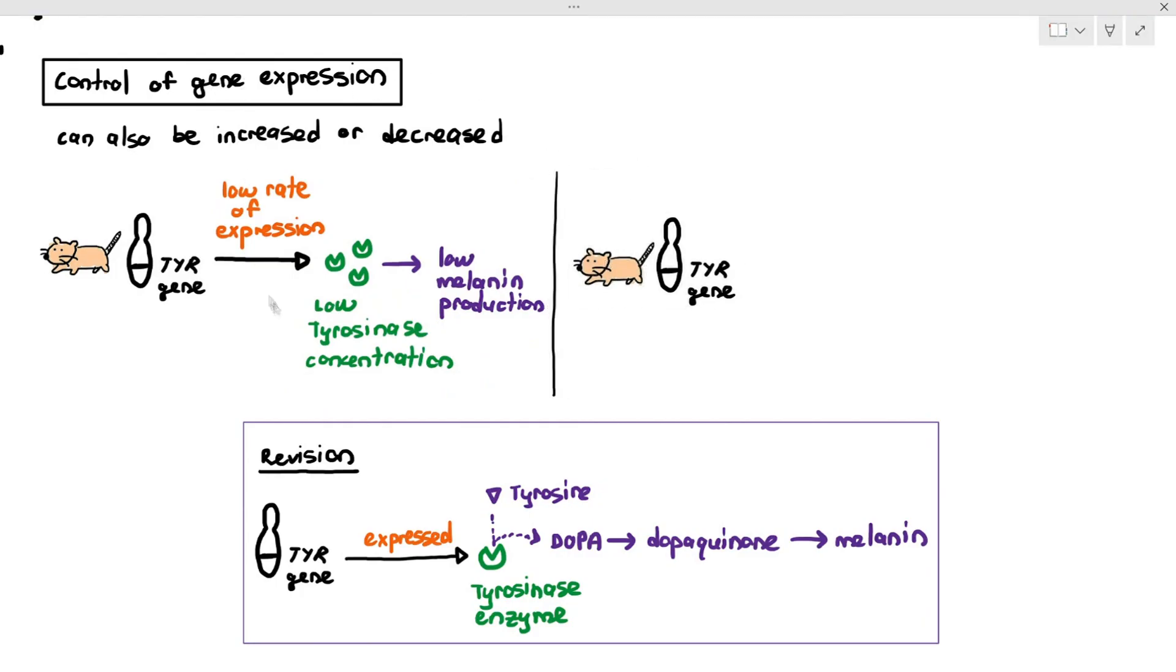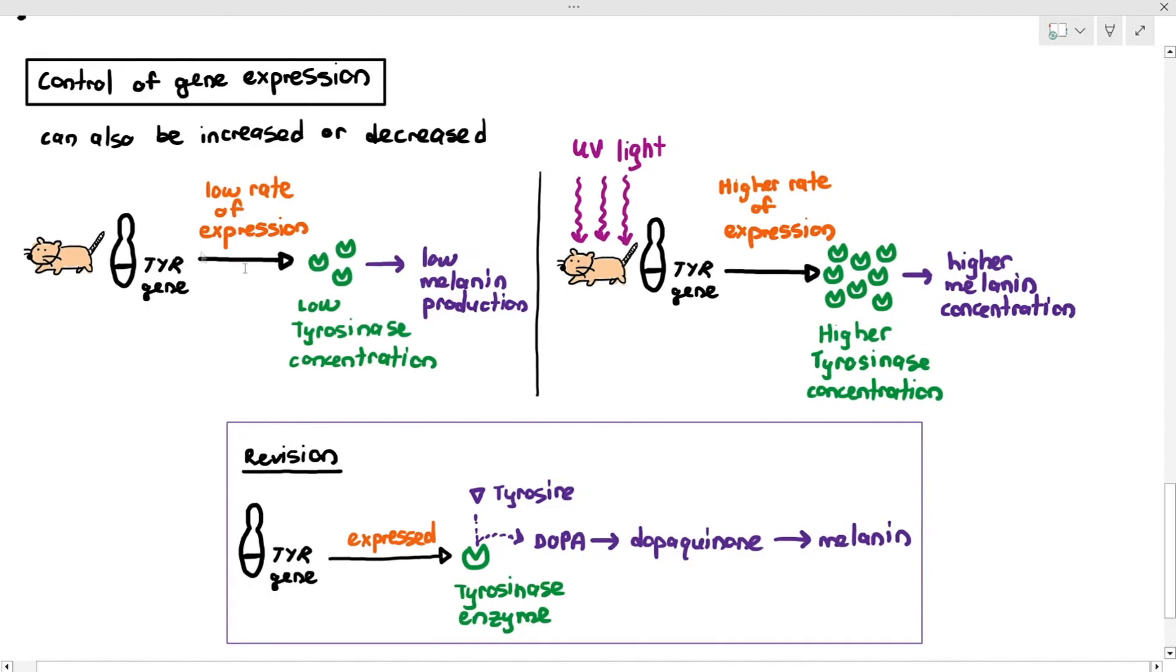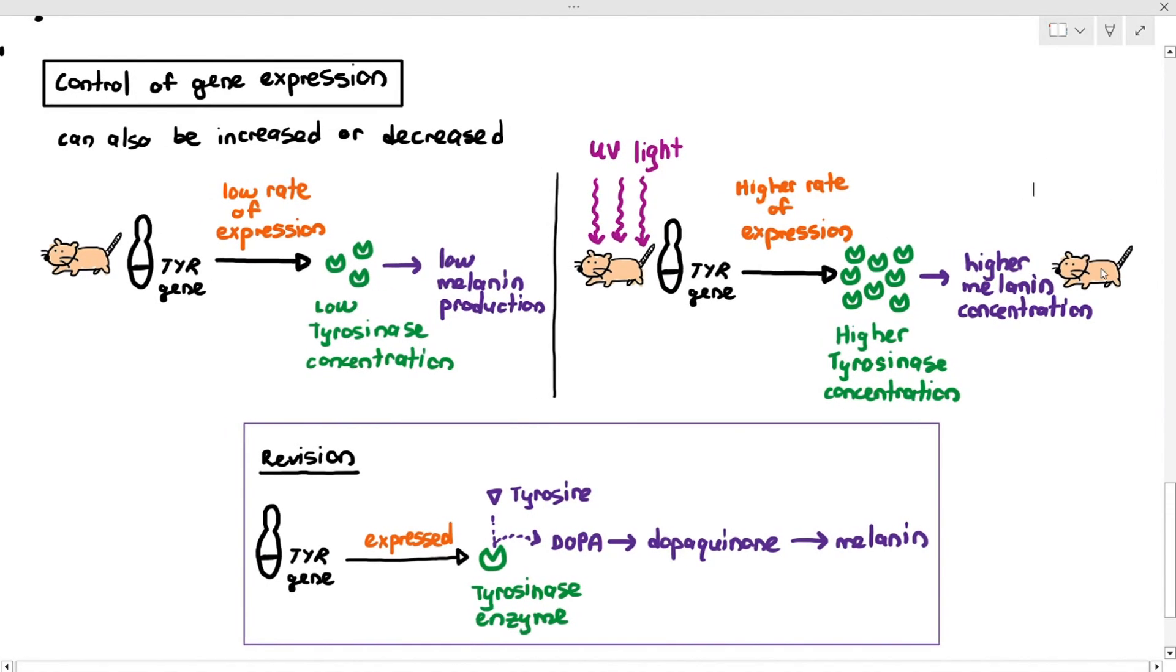However, for a mouse that is exposed to UV light, what may happen inside the cell is, the cell may undergo a higher rate of gene expression. The TYR gene here may undergo a higher rate of expression, where it produces a higher concentration of mRNA, where more mRNA gets translated to produce more tyrosinase. And because there is a higher concentration of tyrosinase, what happens then? Higher melanin production, because more ES complex formation with tyrosinase and tyrosine. So it produces more melanin. So how does it impact the mouse? The mouse will now have a higher melanin concentration. And look what happens to the fur color of the mouse. It becomes a darker color. It's more tanned, or it's a darker fur.